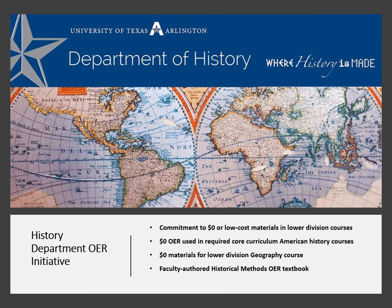The UTA History Department is committed to $0 or low-cost materials for our lower division courses, with $0 being preferable for courses satisfying the core curriculum requirement of six hours of American history for all undergraduates.